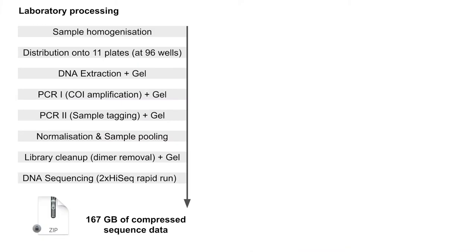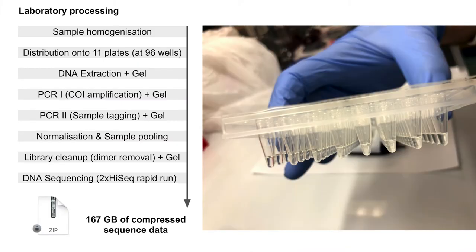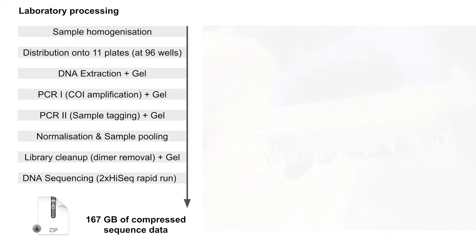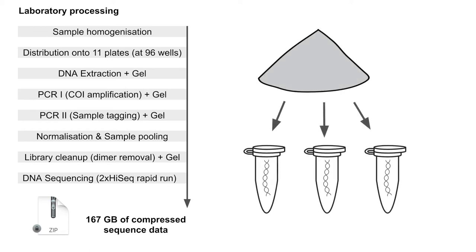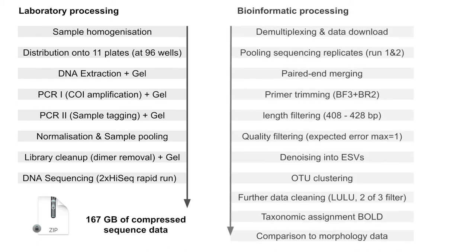We used a pretty standard metabarcoding workflow, working in plates rather than individual samples to keep things efficient. One important aspect of our workflow is that we extracted DNA in triplicates and also processed and sequenced each of those replicates, so that if something goes wrong, we can detect it. Here is also the bioinformatic workflow, which basically relies on denoising followed by OTU clustering with very stringent quality filtering before and after.